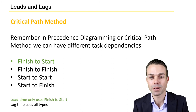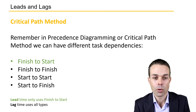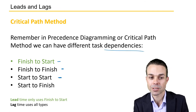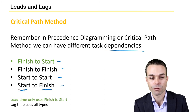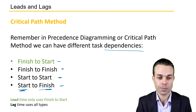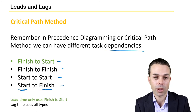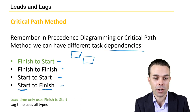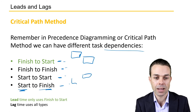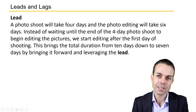In precedence diagramming method or the critical path method we can have different task dependencies: finish to start, finish to finish, start to start, or start to finish — where for example the second activity cannot finish until the first activity has started. Lead time only applies to finish to start, where the next activity cannot start until the previous activity has finished. Lag time however can affect all of these dependency types.